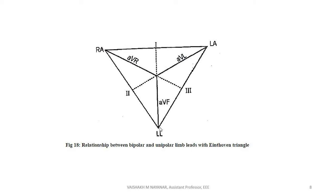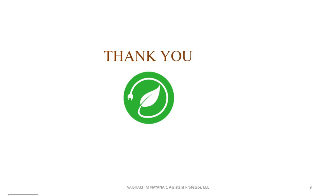In AVF, the left arm and right arm are not connected. So, unipolar and bipolar leads, along with the augmented leads, are all related to Einthoven's triangle. That is why we study how unipolar chest leads relate to this triangle. This concludes the video. Thank you.